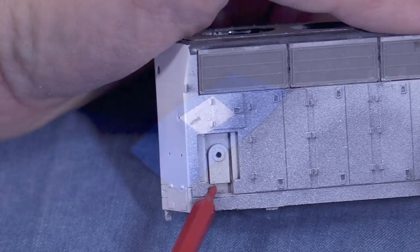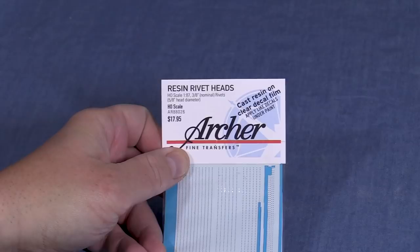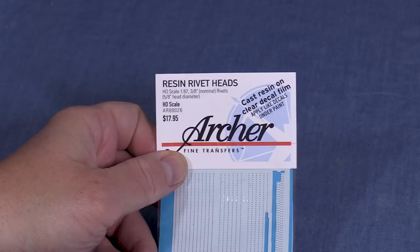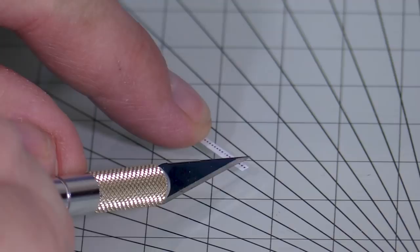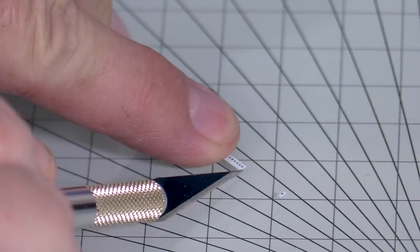On the Proto 2000 brake housing, there are three rivets in a triangular pattern near the bottom. I'm going to use Archer rivet decal sheet 88026 to add this detail to my new part. When applying decals, I use Microscale's Microset and Microsol. Microset goes on first, followed by the decal, then Microsol on top. The rivets come in rows on the decal sheet. Since I only need individual rivets, I'll cut out three of them with my X-Acto knife. To apply the decals, I'll also need some water in a small bowl and a soft brush.